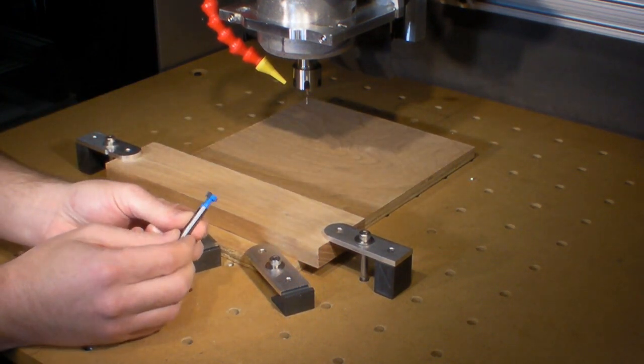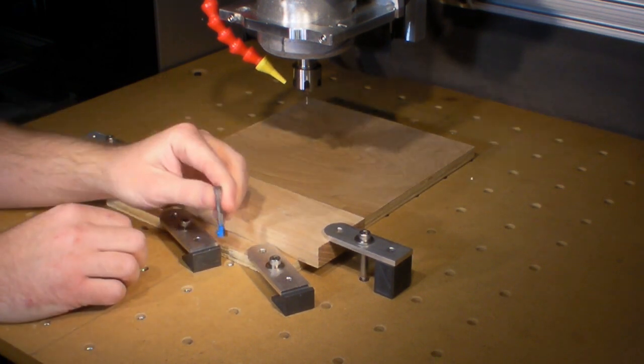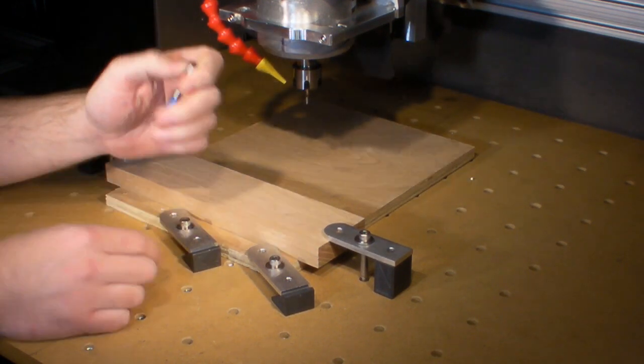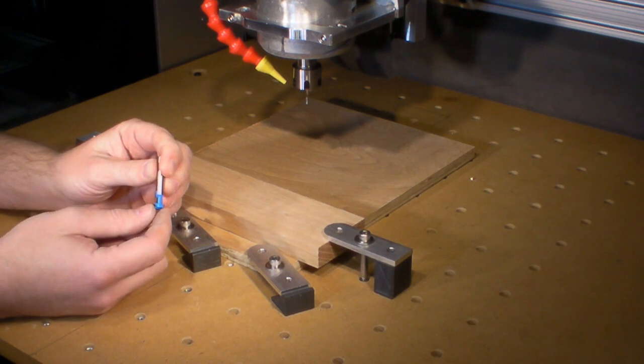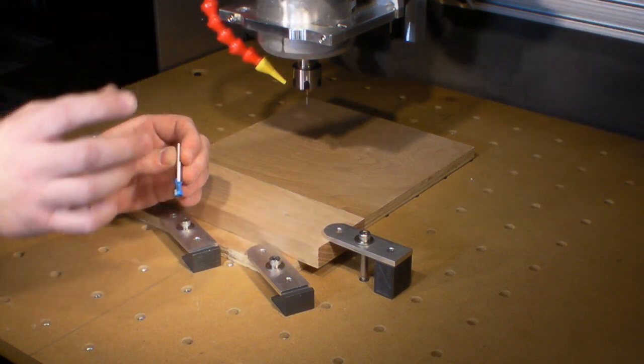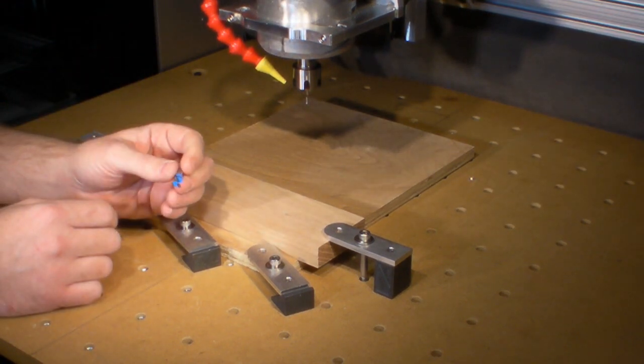This is a keyhole cutter, and basically what it allows you to do is go into the part, jog in your X or Y, and then reverse out. It leaves a circular hole for a screw hole and then leaves a minor diameter slot so that you could hang something on the wall on a screw head or something like that.